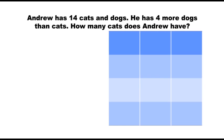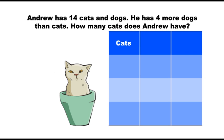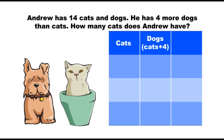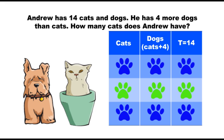First, make a chart with a column for the number of cats, a second column for the number of dogs, and a third column for the total. Remember, he has 14 cats and dogs altogether. Then start in the middle of the total, which is 14.